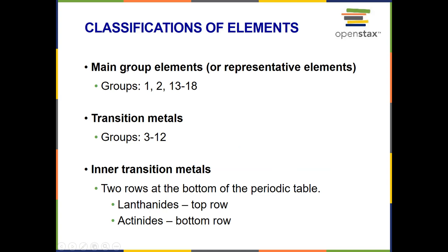Now, as I mentioned, the main group elements, so these are the representative elements. Those are in groups one and two on the far left side, and then 13 through 18 on the right side. The elements that are in between are called the transition metals, and those are in groups three through twelve. I didn't talk much at all about the inner transition metals, and those are the two rows at the bottom of the periodic table. The first row is called the lanthanides, the second one is the actinides, but we're not going to be discussing those in this course particularly.